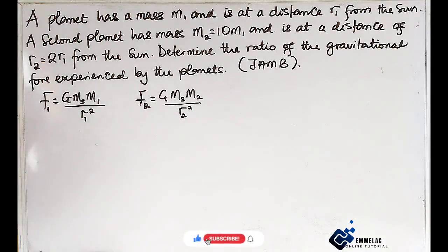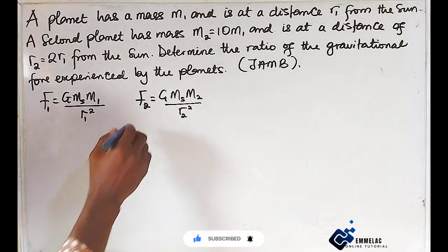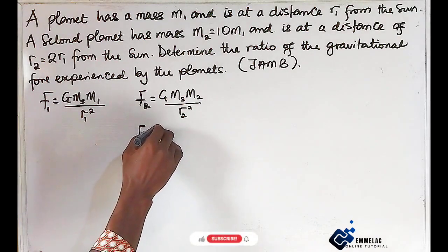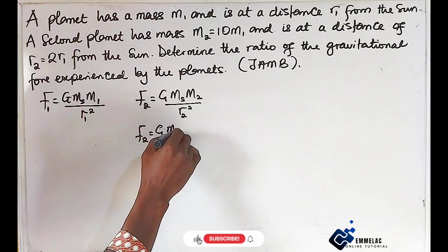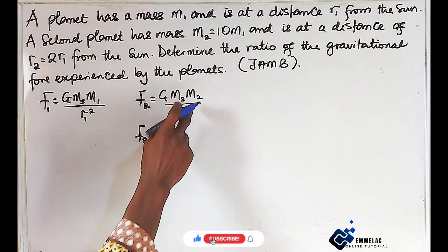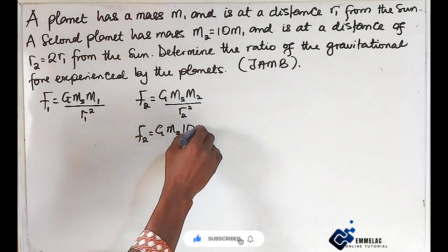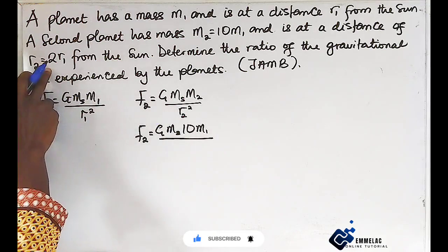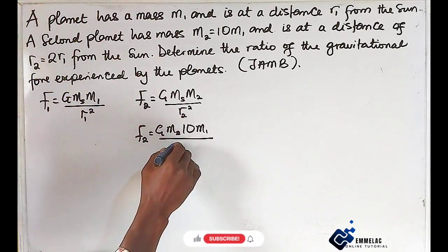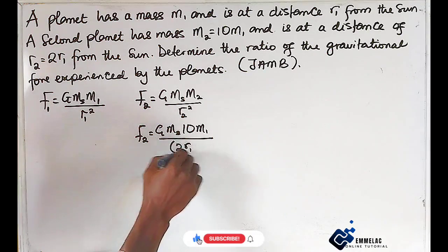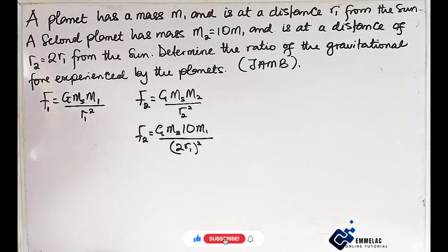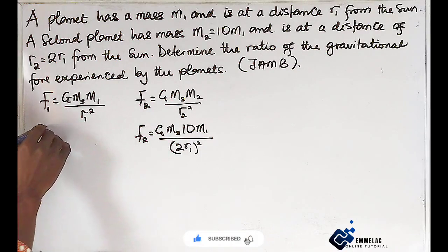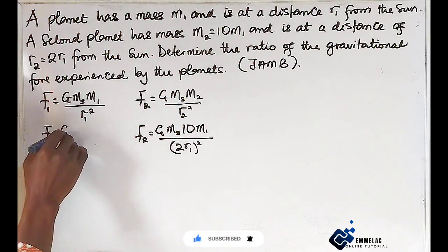So we can rewrite F2 here to give us GMs(10m1)/(2r1)². F1 still stands the same.